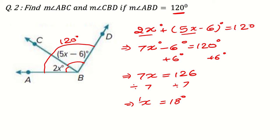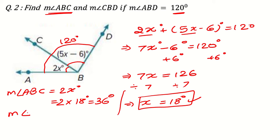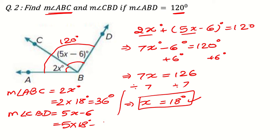Remember, the value of x is not the answer — and it will likely be one of the choices in the exam just to confuse you. They are asking for the angle, not x. So the measure of angle ABC is 2x, which is 2 times 18 equals 36 degrees. The measure of angle CBD is 5x minus 6, which is 5 times 18 minus 6, giving 90 minus 6 equals 84 degrees.